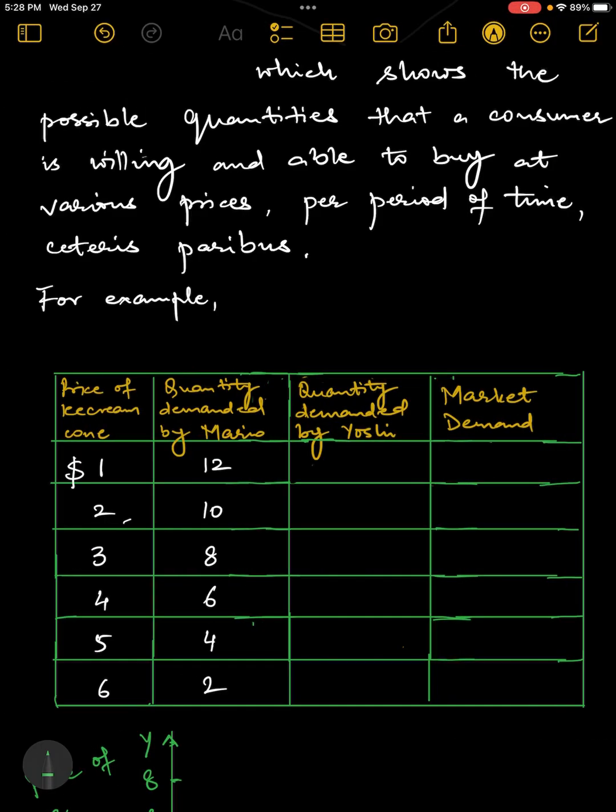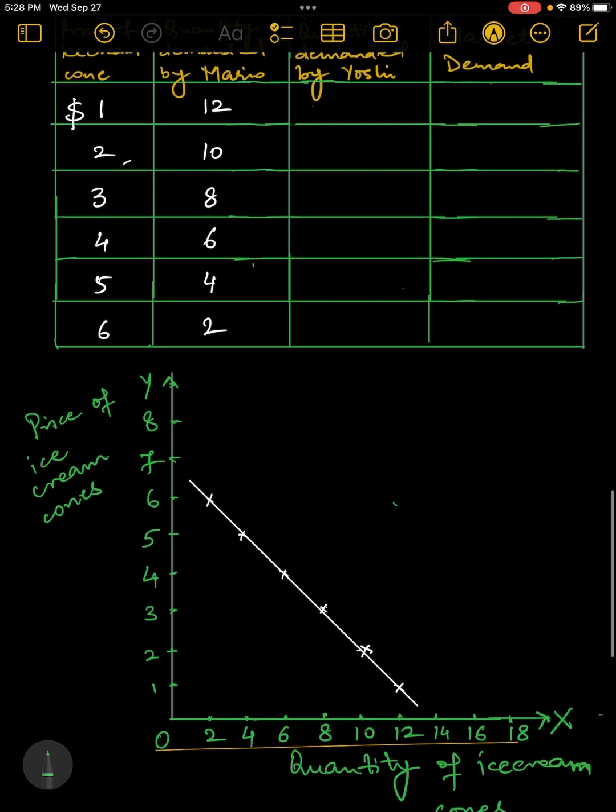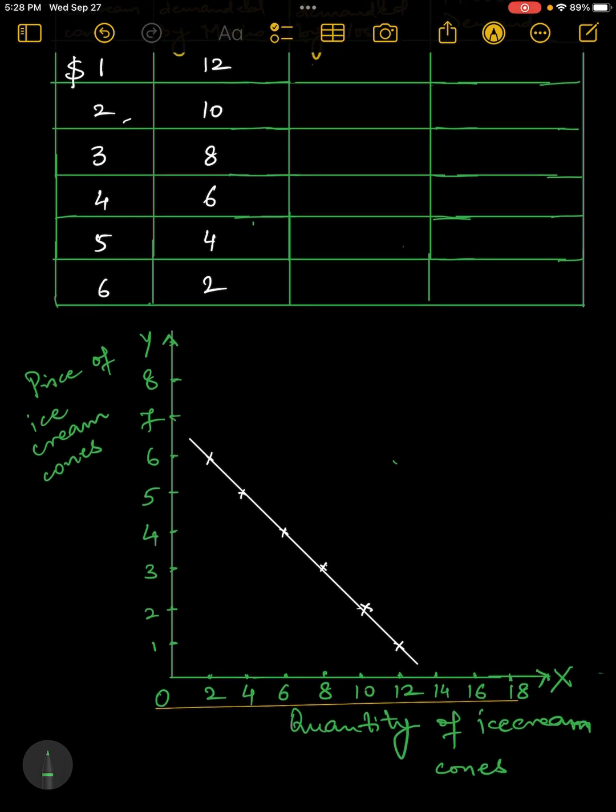Now, if I want to plot the same schedule in the form of a graph, which I have already done here, I have taken price of ice cream cones on Y axis and quantity of ice cream cones on X axis. Here, what I have shown is that at the price of $1, Mario demands 12 ice creams.